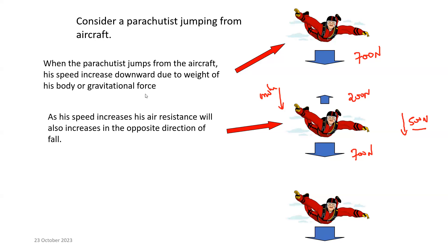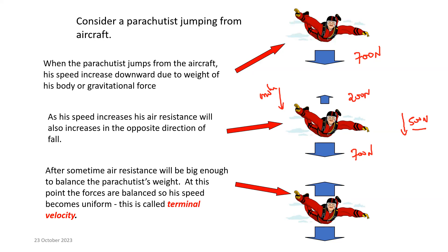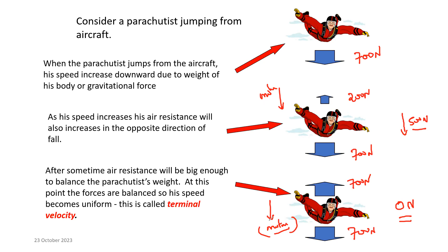Eventually, once his weight and air resistance balance each other, he will reach terminal speed — a constant speed. Terminal velocity means the constant velocity an object reaches when falling in the presence of air. At this point, 700 newtons downward equals 700 newtons upward, so the resultant force is zero. He won't stop — he continues moving downward — but his speed will no longer change.